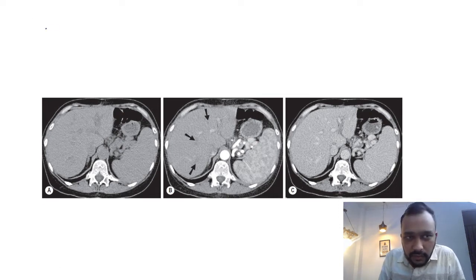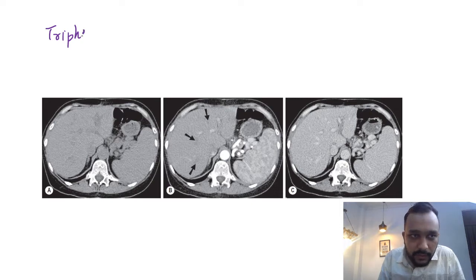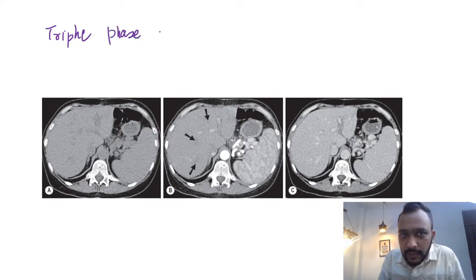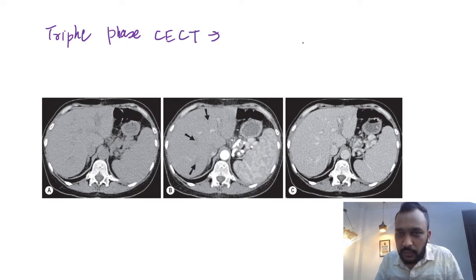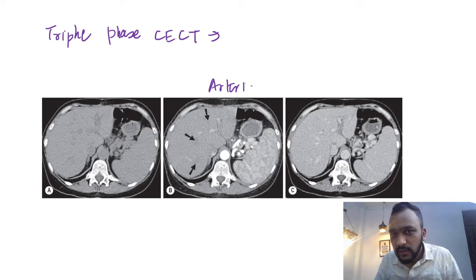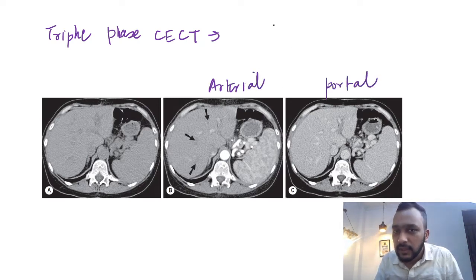In triple phase CECT abdomen, the CT scan is required in three phases: one is the arterial phase, then the portal venous phase, and then we have the delayed phase.